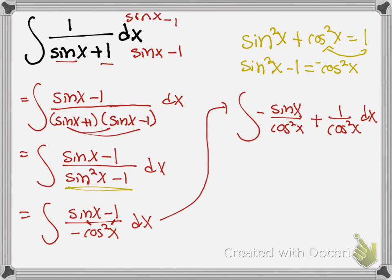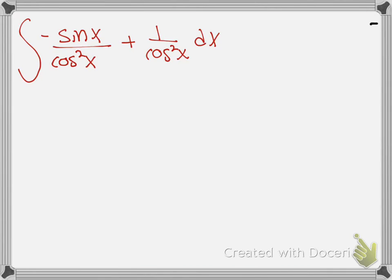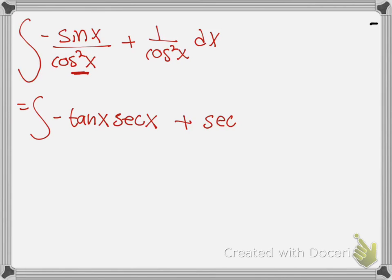Now I can look at each fraction separately using trig identities. Negative sine divided by cosine is negative tangent, but there's another cosine in the denominator, making it negative tangent times secant. And 1 over cosine squared is secant squared. So I have the integral of negative tangent x secant x plus secant squared x, dx.